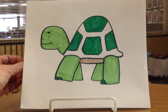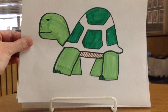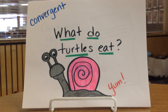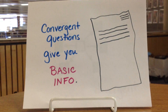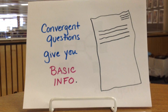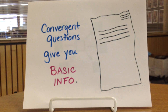Let's go back to our turtle example. A convergent question about our turtle would be: what do turtles eat? We could quickly look up information and find that they have a plant-heavy diet but also will consume insects, snails, and fish. We found the answer in about a minute and can check off that question.